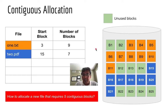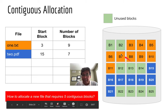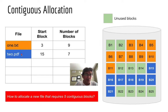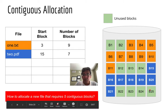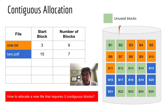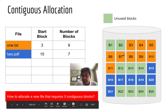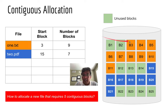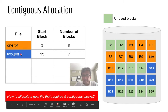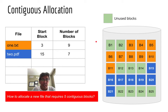In our illustration, our disk capacity is very small, holding only 25 blocks. We have only two files: one.txt and two.pdf. The block numbers are identified as B1, B2 up to B25. The light green blocks are unused or free blocks — currently we have a total of nine free blocks. The orange blocks are allocated to one.txt and the blue blocks to two.pdf. For contiguous allocation, we need to keep the file name, the starting block, and the number of blocks — or alternatively, the last block number.